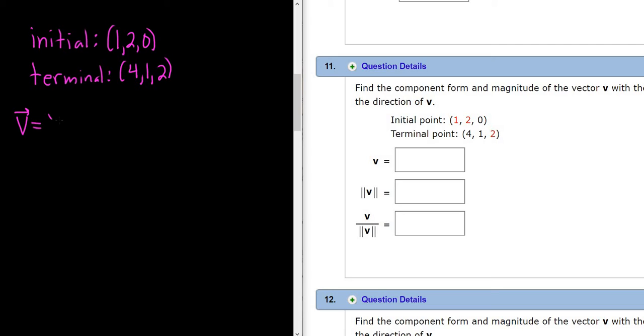So to find v, you always do terminal minus initial. This is super important. Terminal minus initial. Very key idea. Simple but important.